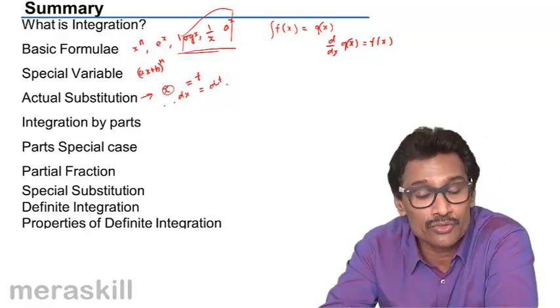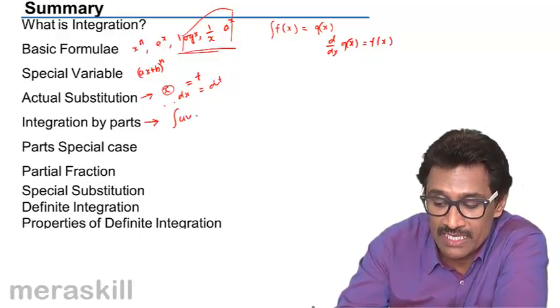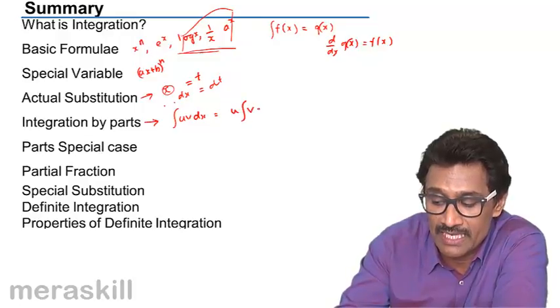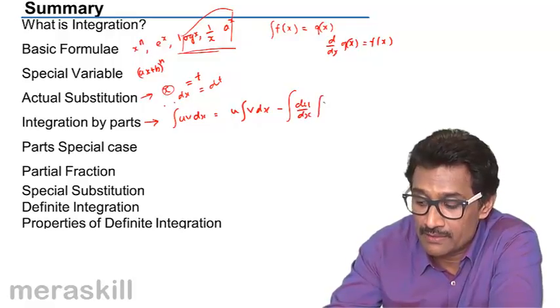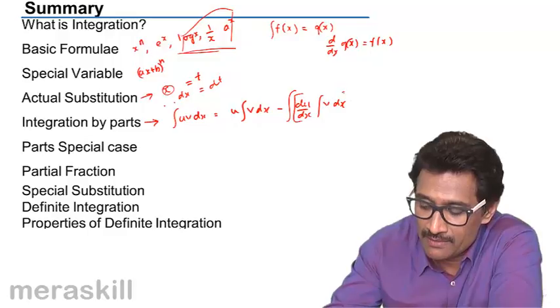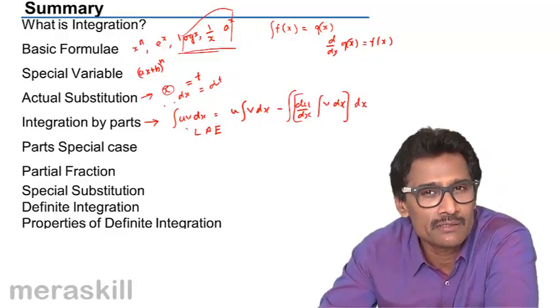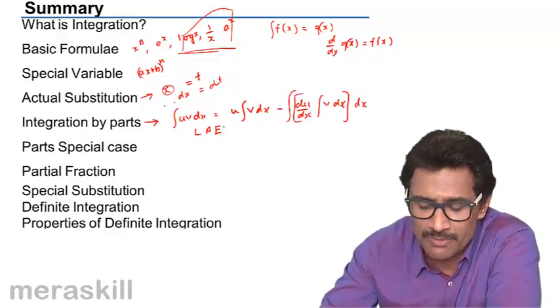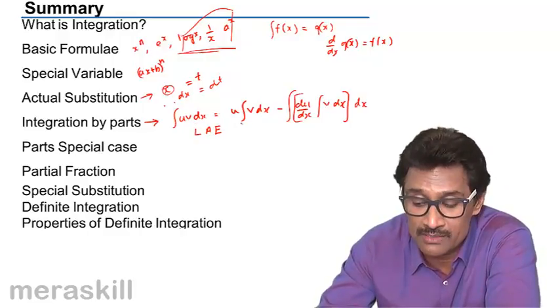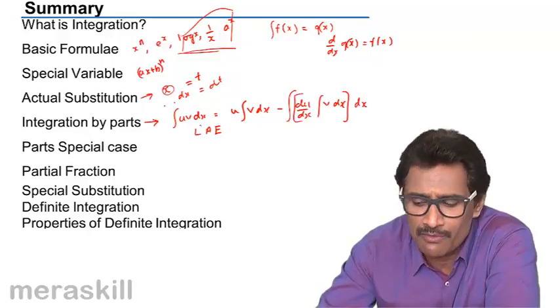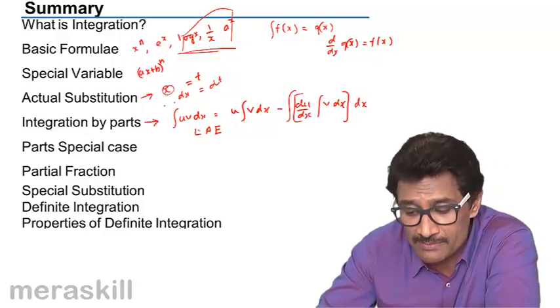Then we did integration by parts. That is, integral of uv dx is nothing but u into integral v dx minus integral of du dx and integral of v dx product. In this we did about the rule of LIATE. Inverse function and trigonometric are not very relevant for us, so whenever there is a tie as to what should we take as u and what should we take as v, we should always be taking the logarithmic function. We can do the other way around but it's going to take a very long time. The logarithmic function will always be taken as u.